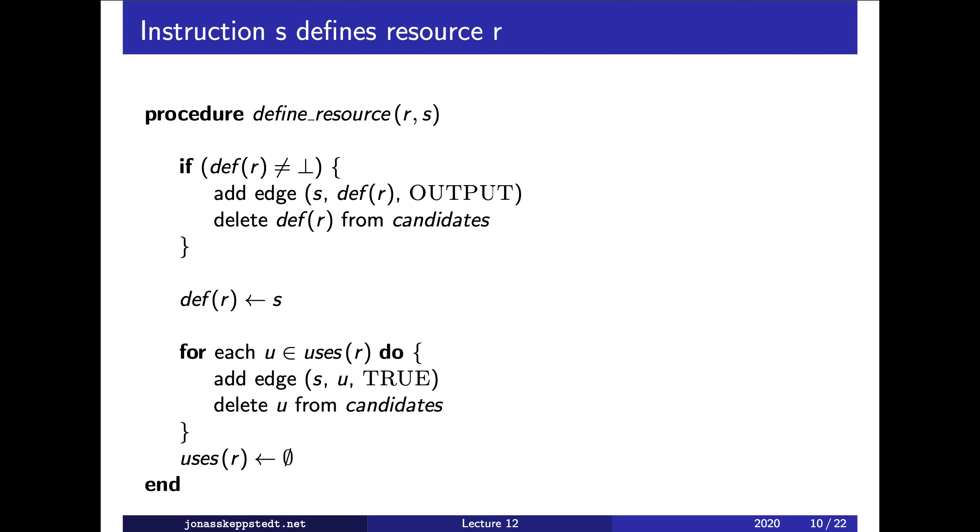First, we check if there already is an instruction which defines this resource. So say this is s and it defines x, and there is another instruction which also defines x, y plus 2 for instance. So what we want here is an output dependence from s to t.